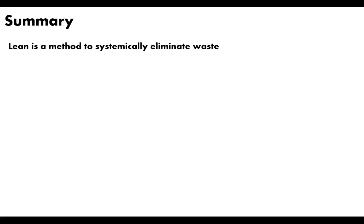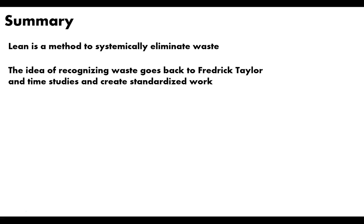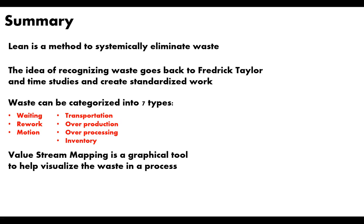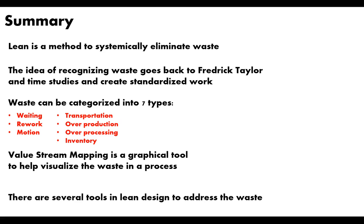In summary: Lean is just a method to systematically eliminate waste — a way of getting rid of waste by following a set of rules and measured steps. The idea of recognizing waste goes all the way back to Frederick Taylor, who came up with standardized work and time studies. There are seven types of waste: waiting, rework, motion, transportation, overproduction, overprocessing, and inventory. Value stream mapping is a graphical tool that helps visualize what the waste is in your process. And there are several lean tools designed to address waste — you can always find a tool to deal with waste in one form or another.